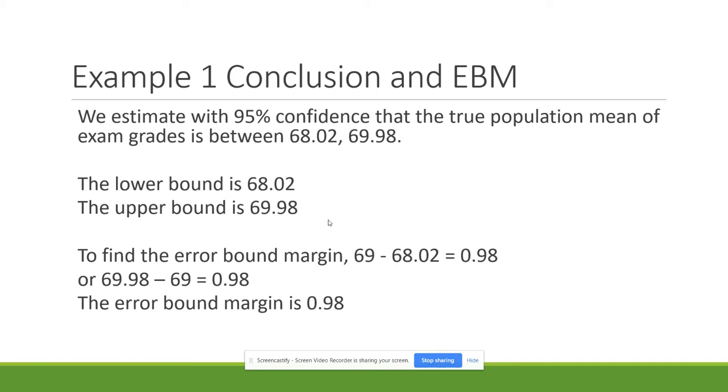If I'm looking at ranges for the scores, I can say I'm 95% confident that the exam scores are going to fall between 68.02 and 69.98. What's going to fall between that range? The true population mean. I'm using that sample to see what my population would do. Because I don't have my population mean, here's a way for me to estimate it.